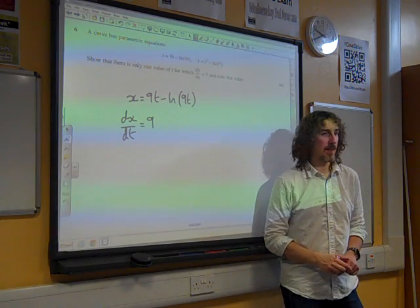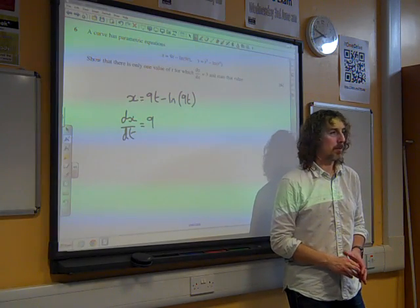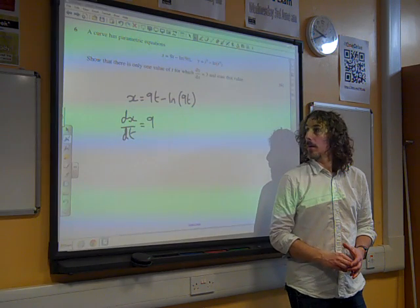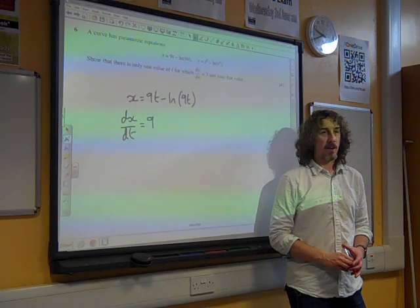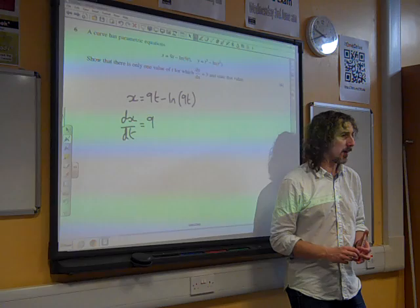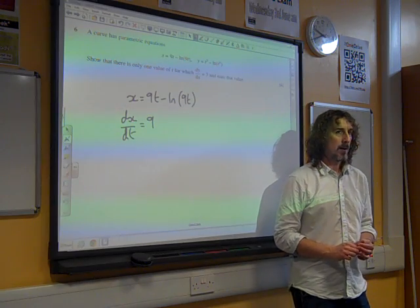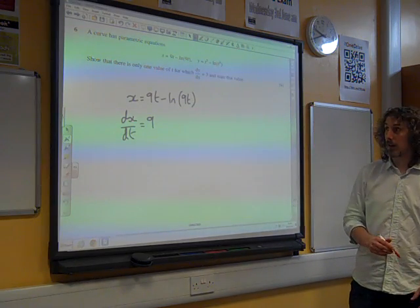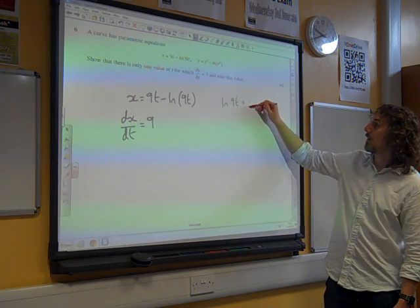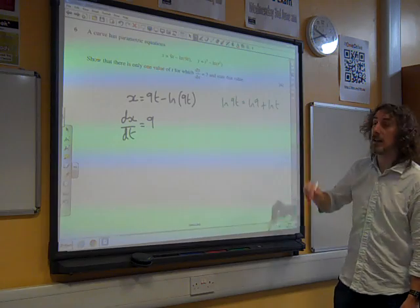Differentiating the natural log of 9t is one of those that sometimes catches people out, because actually the 9 adds nothing to this. When we differentiate it, the 9 has no bearing on it. Because really what we've got, you can think of ln(9t) as the same as ln(9) plus ln(t).